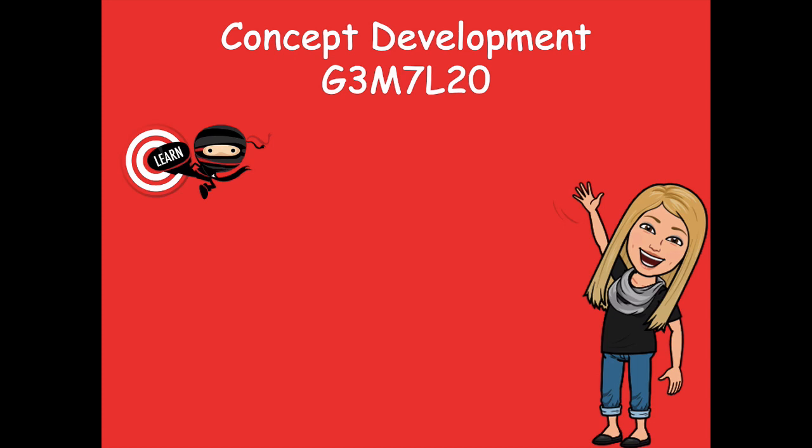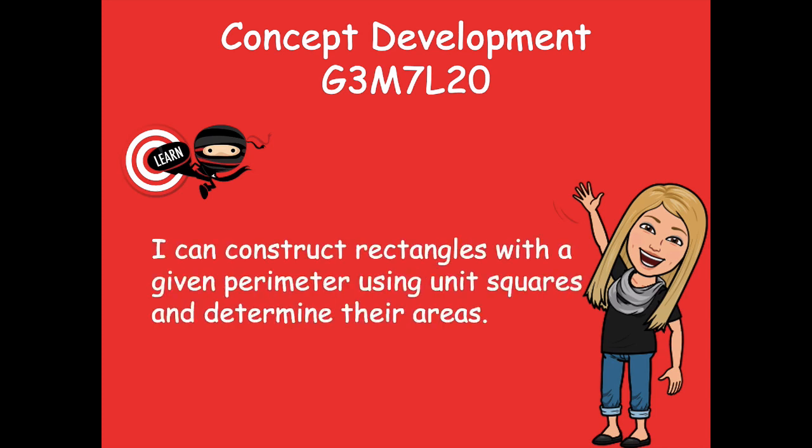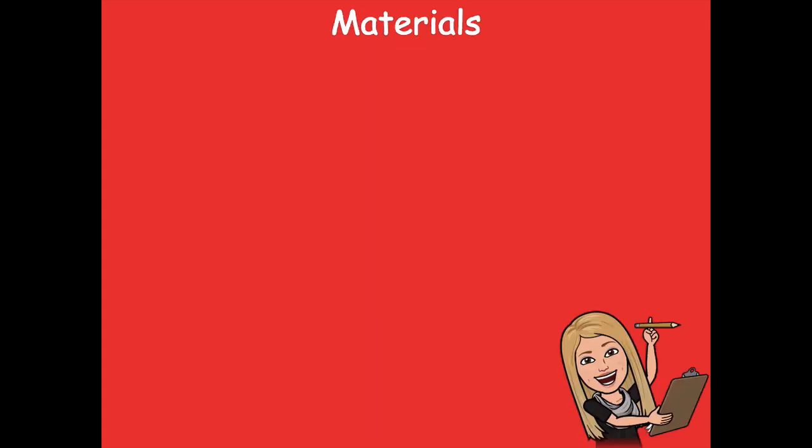Hey friends, it's Mrs. Walker. For our lesson today we're going to continue to talk about area and perimeter. Our learning goal says: I can construct rectangles with a given perimeter using square units and determine their areas. So in this lesson we're actually going to be given the perimeter and then we're going to have to find the area of the rectangles.